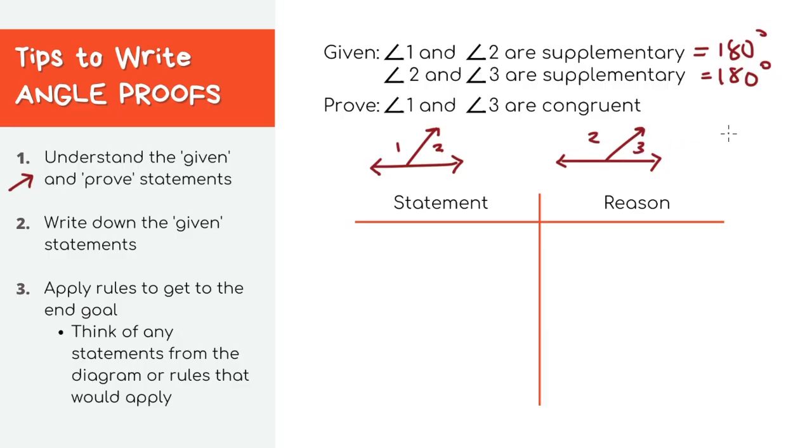Next, the prove statement is asking you to prove that angle one and angle three are congruent. Next, let's do the easy part, which is write down the given statements. We'll copy down that the angles are supplementary. The reason is again just that it's given.